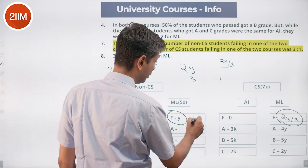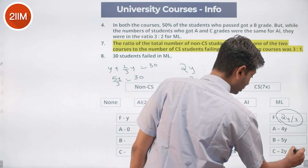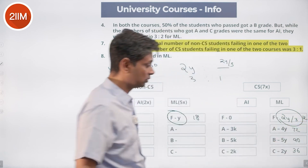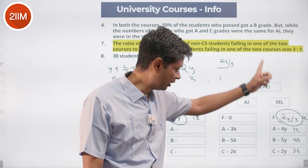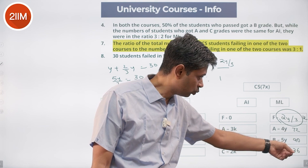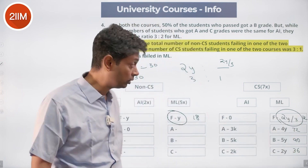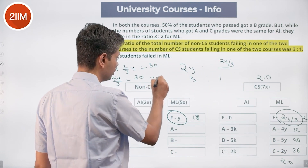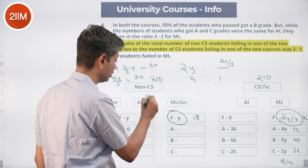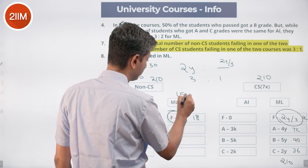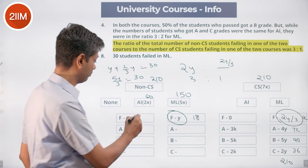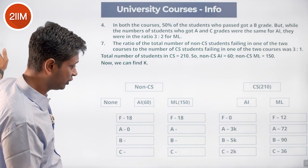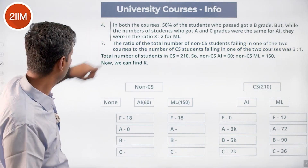From 5Y/3 = 30, we get Y = 18. That's super powerful! So: non-CS failures in AI = 18, non-CS failures in ML = 18, CS failures in ML = 12. For ML CS grades: 4Y=72, 5Y=90, 2Y=36. Total ML CS students = 72+90+36+12 = 210. So 7x = 210, meaning x = 30. Non-CS in AI = 60, non-CS in ML = 150.